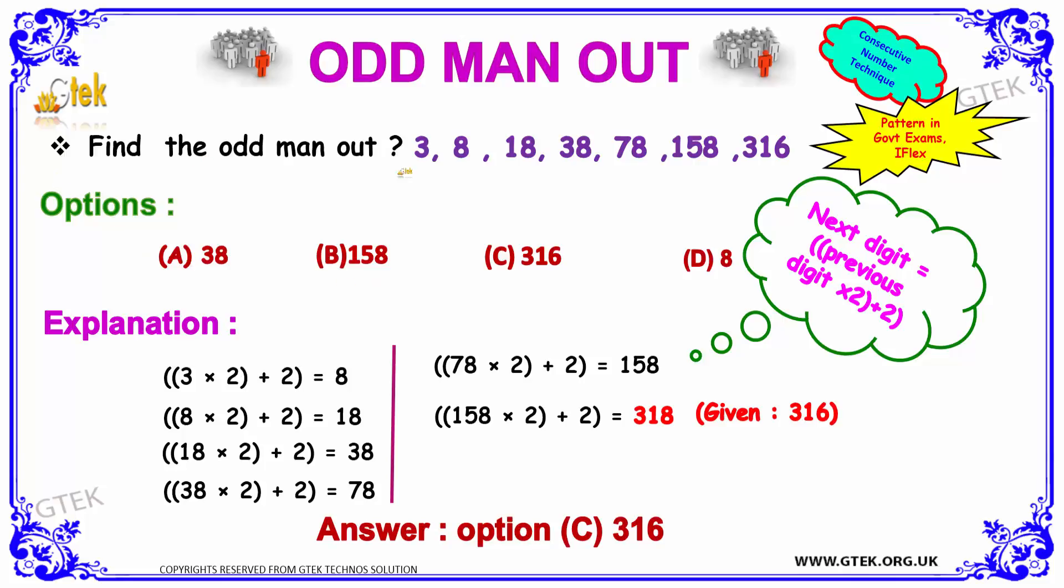Now, let's see. 3, 8, 18, 38, 78, 158, and 316. Over here, we got 3 into 2 plus 2. So, multiples of the number.